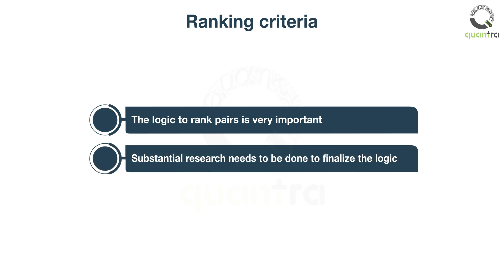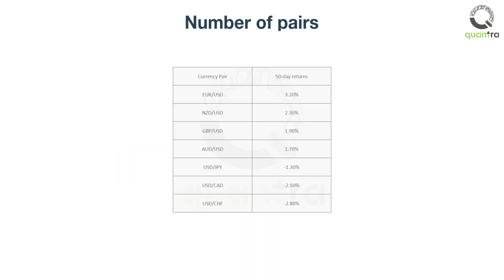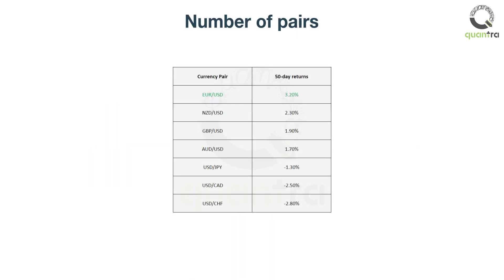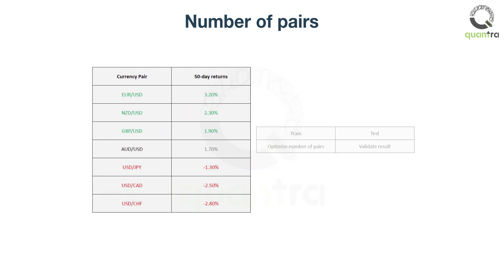Therefore, substantial research needs to be done to finalize the ranking logic. We went long on close to half of the currency pairs and short on close to half. The number of trading pairs to go long and short can be optimized in the training set and validated in the test set.